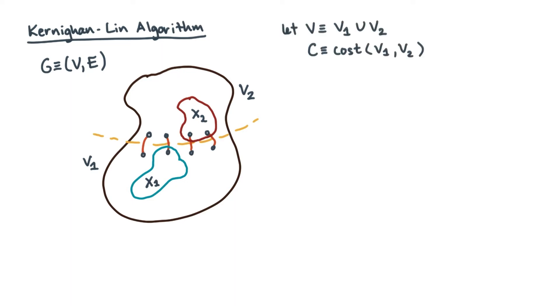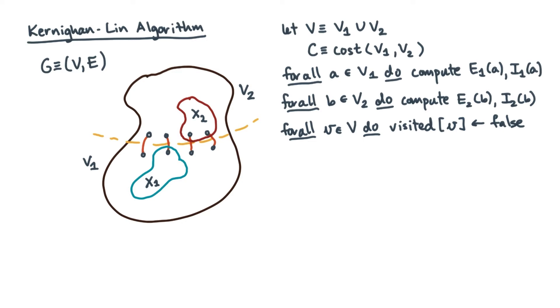First, compute the internal and external costs for every vertex. Next, mark all the nodes as unvisited. Then carry out an iterative procedure.